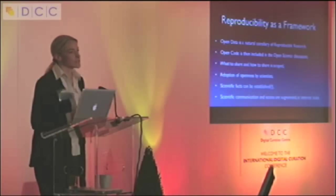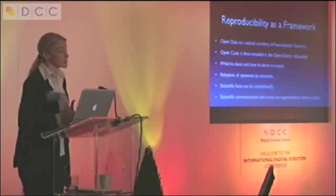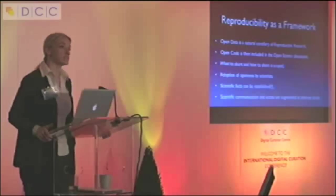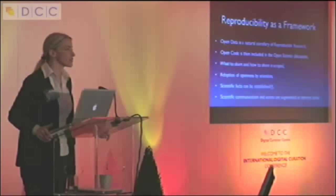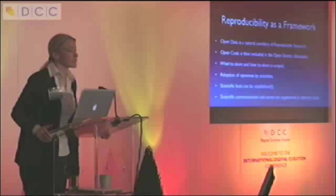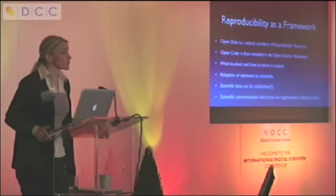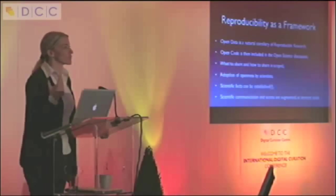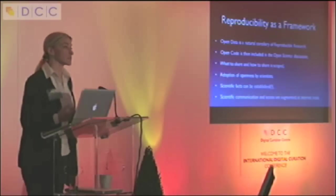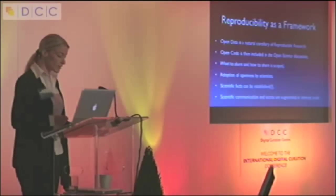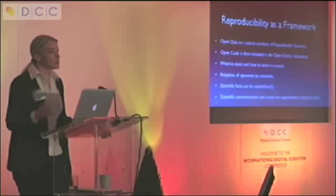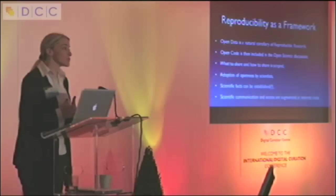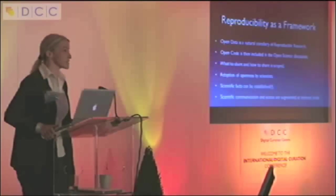Reproducibility gives us guidance on what to share, how to share it, what's important, what to prioritize. In discussions with scientists on a one-on-one level, the concept of open data isn't clear at all. Do I share before publication, after publication? Should I share everything, all the versions that I've gone through? If you think about reproducibility, then it becomes very clear to the computational scientist what's important to share, and what they can focus their energies on. To communicate with scientists about sharing and to motivate, it's best to meet them where they are. Reproducibility is a concept every scientist understands and accepts.